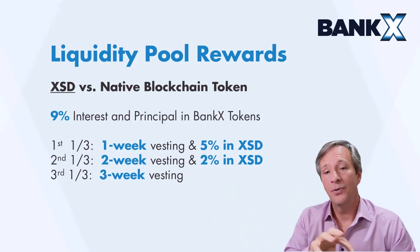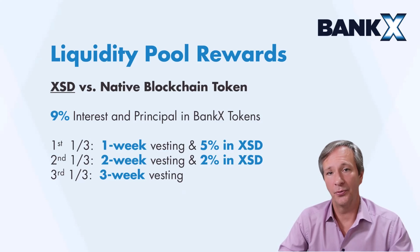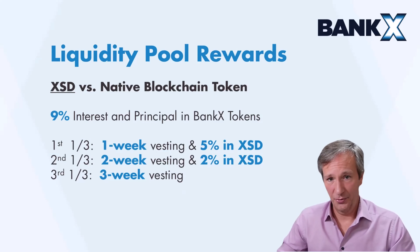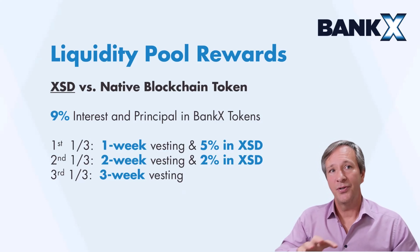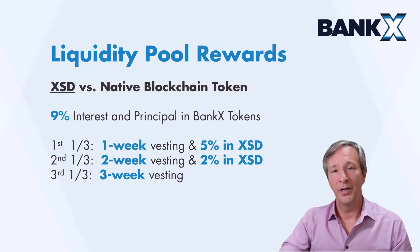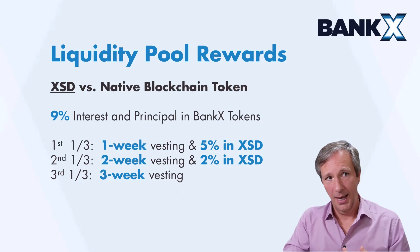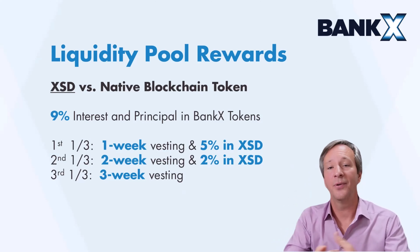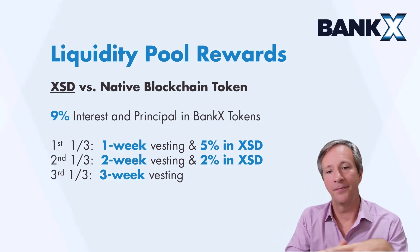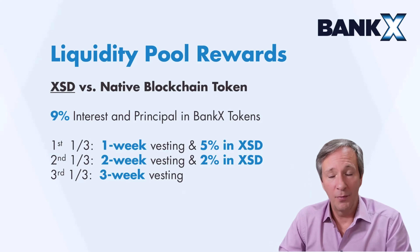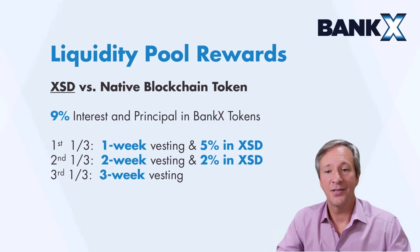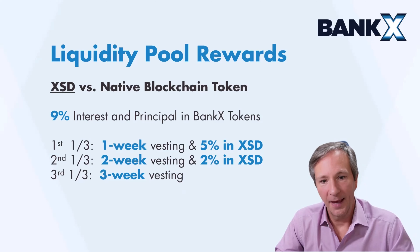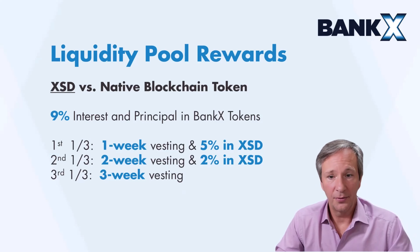When the system identifies that it's in a deficit and needs liquidity in the XSD pool, we pay the most in BankX — you earn 9% in BankX tokens and your principal is also paid in BankX tokens. The sooner you sell into the liquidity pool when there's a need, we shorten your vesting schedule and give you more XSD. For example, with a 300,000 deficit: the first 100,000 has a one-week vesting period and an additional 5% in XSD; the second 100,000 has a two-week vesting period and 2% in XSD; and the final 100,000 has a three-week vesting period.